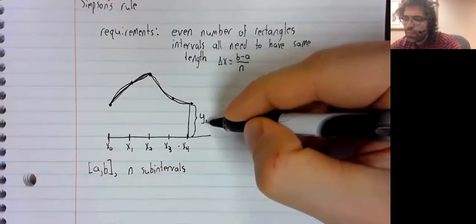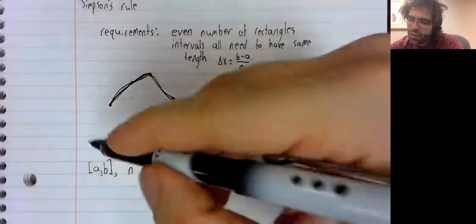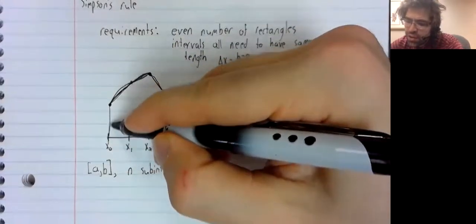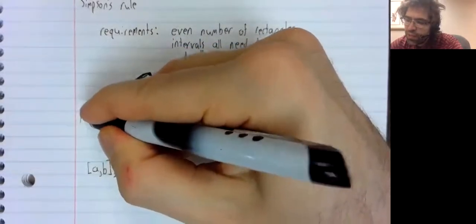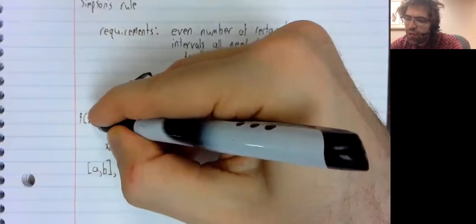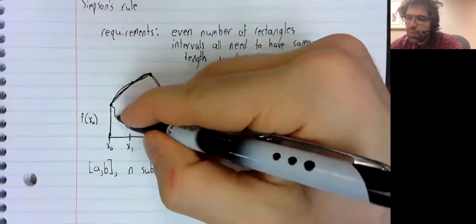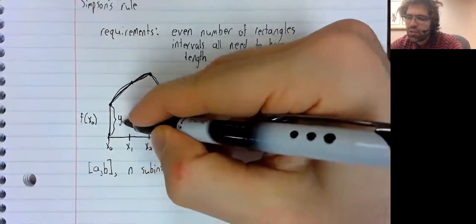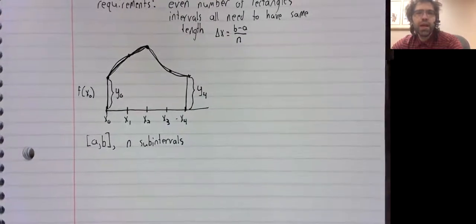And these vertical distances, we'll call y. So this vertical distance is f of x zero. But when we write down Simpson's Rule, it's going to appear as y zero.